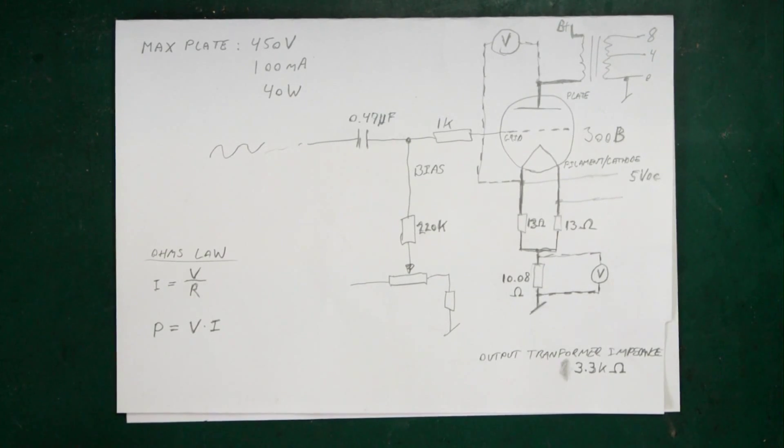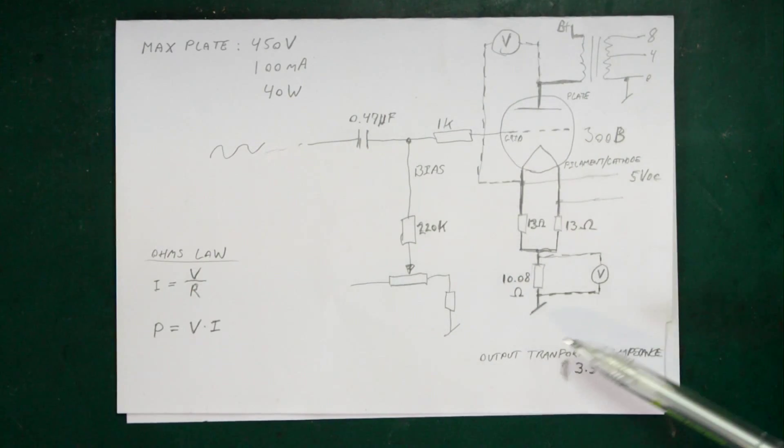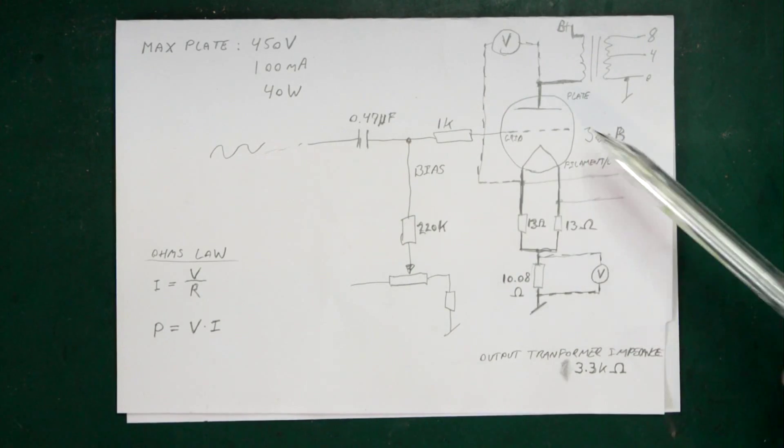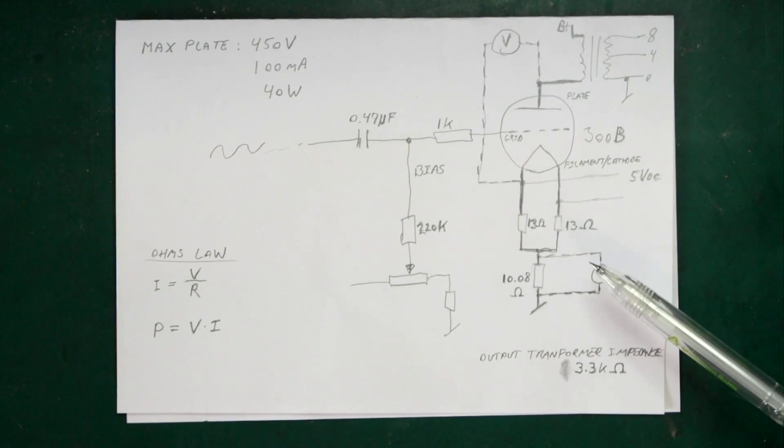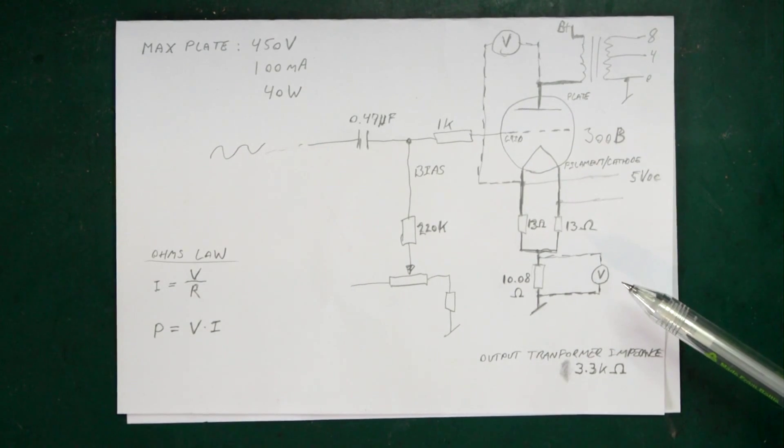Okay, so we're ready for some bias adjustment of this little amplifier. Before it's possible to do bias adjustment we need to have a look at how this amplifier is designed. So I've sketched out the essential parts for the bias adjustment, the things we need to understand in order to be able to adjust the bias correctly for this 300B output tube.